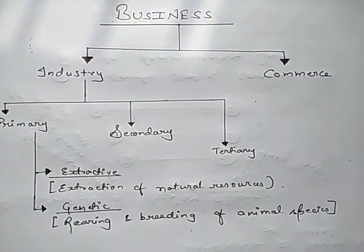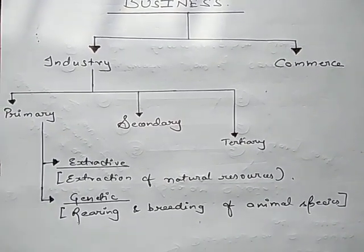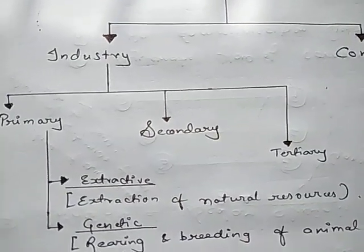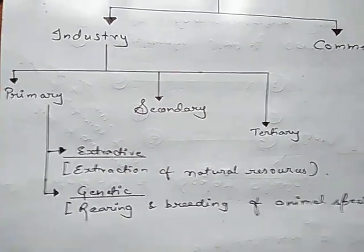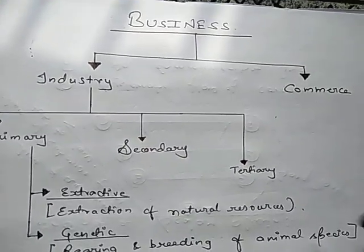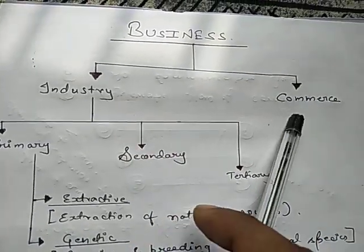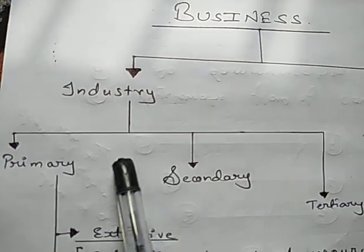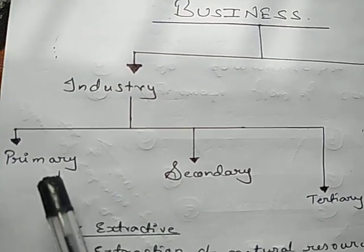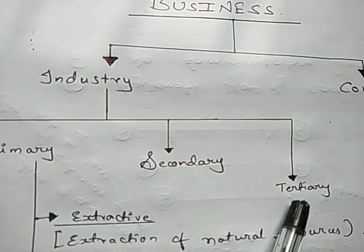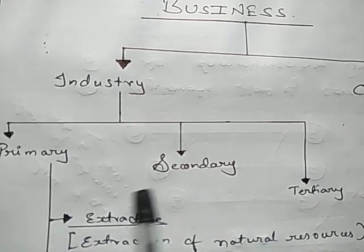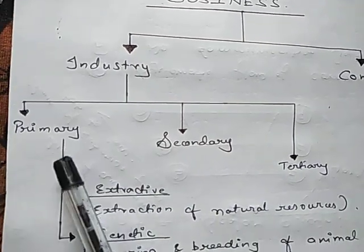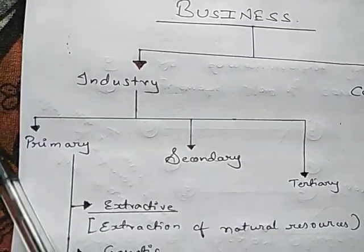Now we will discuss the types of industry. Business is divided into two types — industry and commerce — and industry itself is divided into three types: primary industry, secondary industry, and tertiary industry. These are the three types of industry.